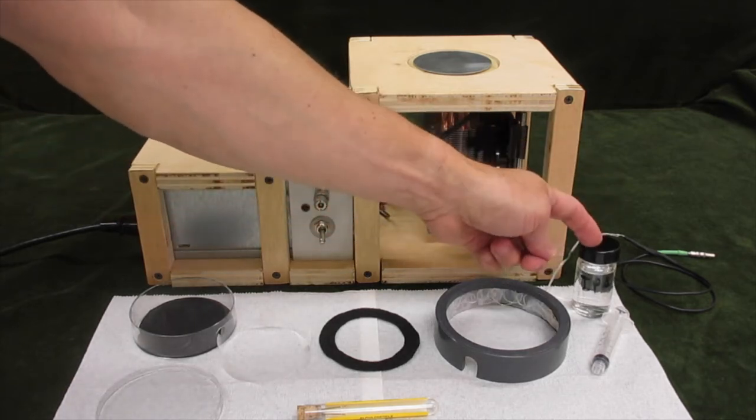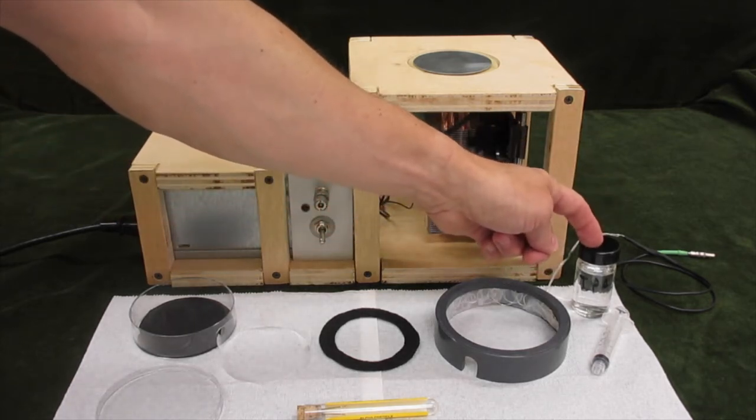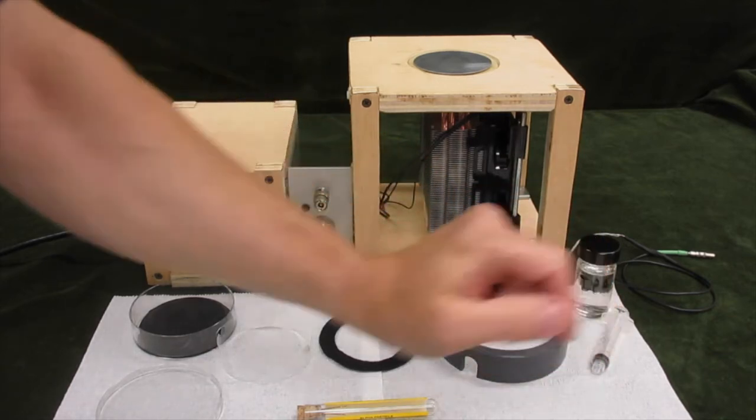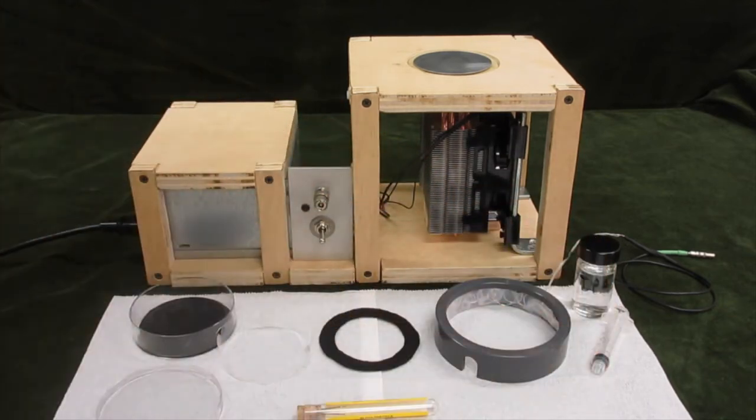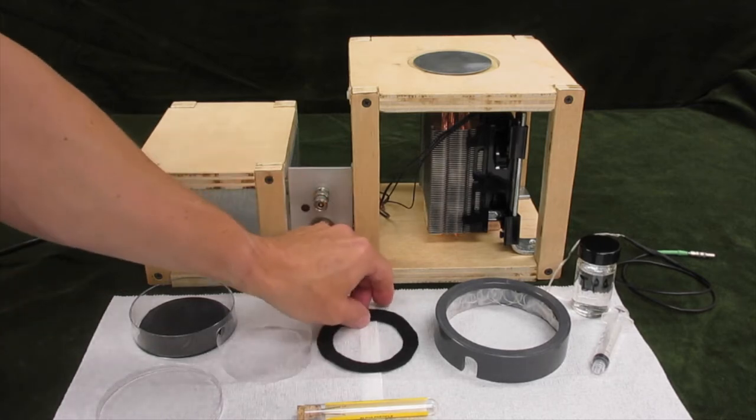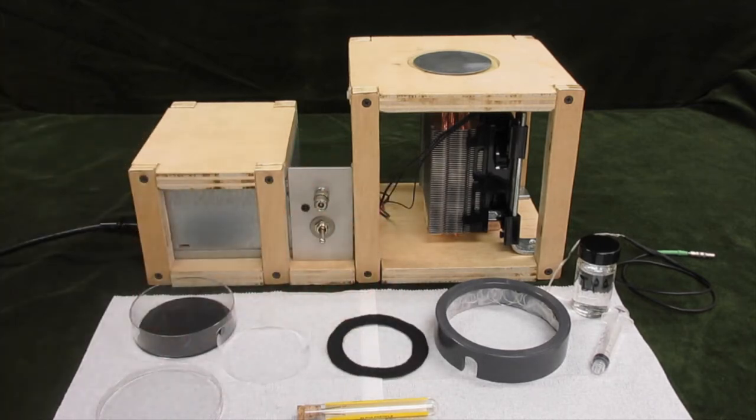We use, in our chamber, isopropyl alcohol, and we use a small syringe to dispense about one milliliter of that material into the felt ring here that will be used to provide the alcohol for the inside of the cloud chamber.